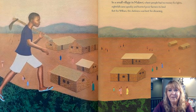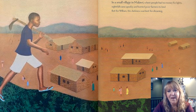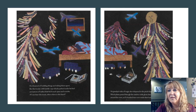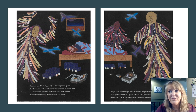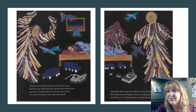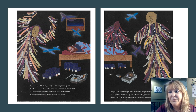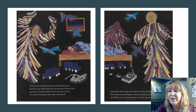In a small village in Malawi where people had no money for lights, nightfall came quickly and hurried poor farmers to bed. But for William, the darkness was best for dreaming. He dreamed of building things and taking them apart, like the trucks with bottle cap wheels parked under his bed and pieces of radios that he'd crack open and wonder, if I can hear the music, then where is the band? His grandpa's tales of magic also whispered in the pitch black of his room, which planes passed over the window while ghost dancers twirled around the room, as if a hundred men were inside their bodies.